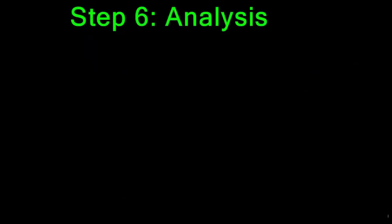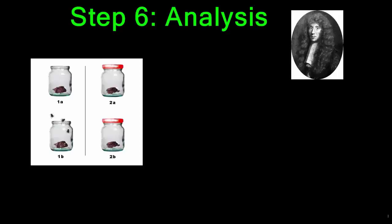Step six of the scientific method involves analyzing the data to find information that either supports or goes against your hypothesis. In Redi's experiment, he was looking to see if maggots come from decaying meat or if they come from flies. The relevant data here is the number of maggots at the end of the experiment — that's an example of quantitative data.